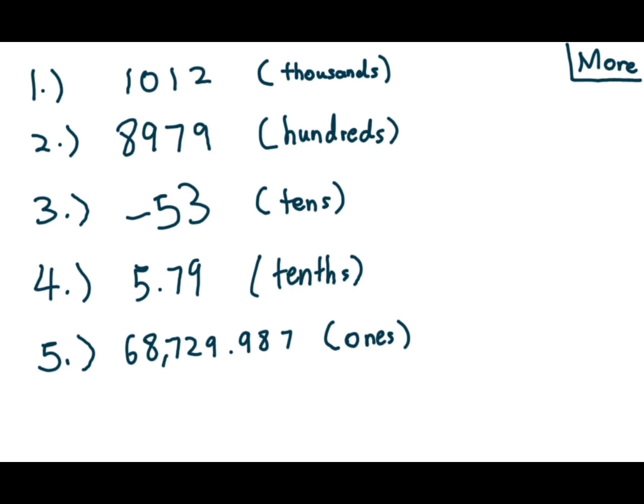Let's take a look at some more examples. 1012, rounding to the thousands place. This time we look back at the hundreds place, 0. We can easily confirm that 0 is less than 5, so the rounded version of this number is 1000.